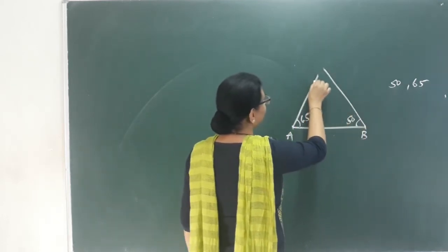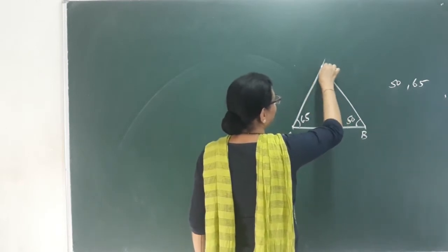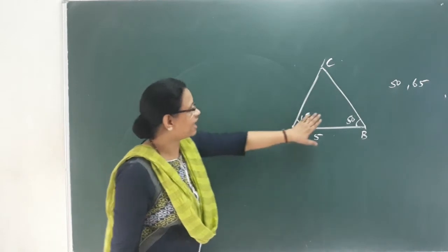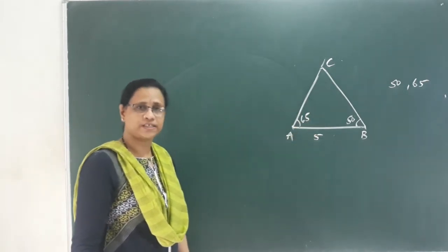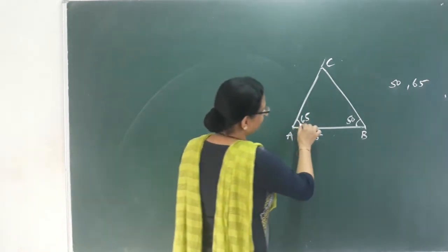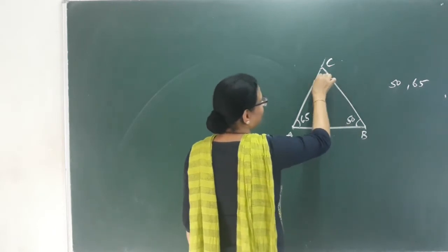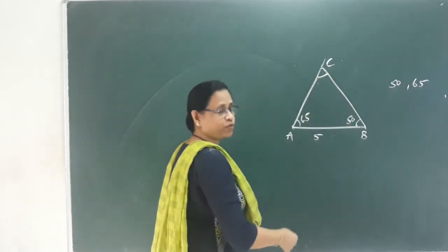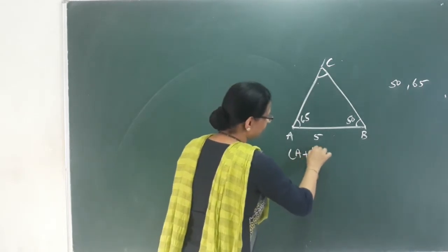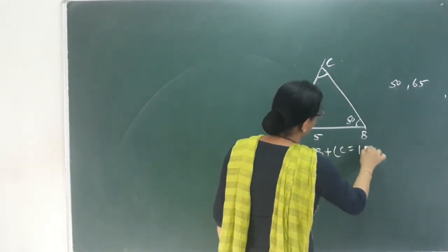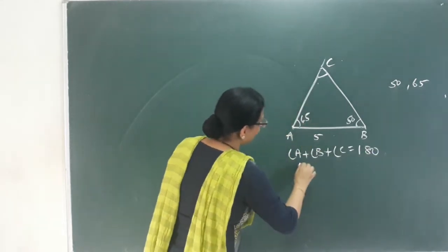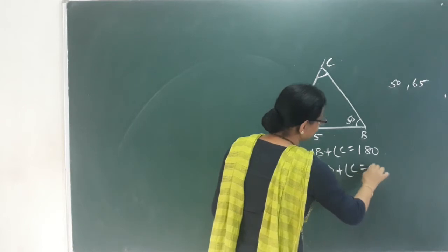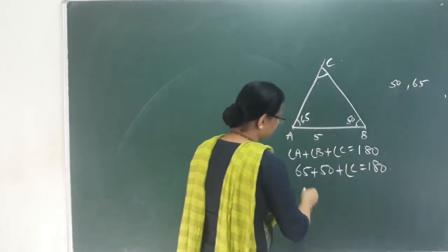Label the triangle A, B, C. Using the angle sum property: angle A plus angle B plus angle C equals 180 degrees. So 65 plus 50 plus angle C equals 180 degrees.